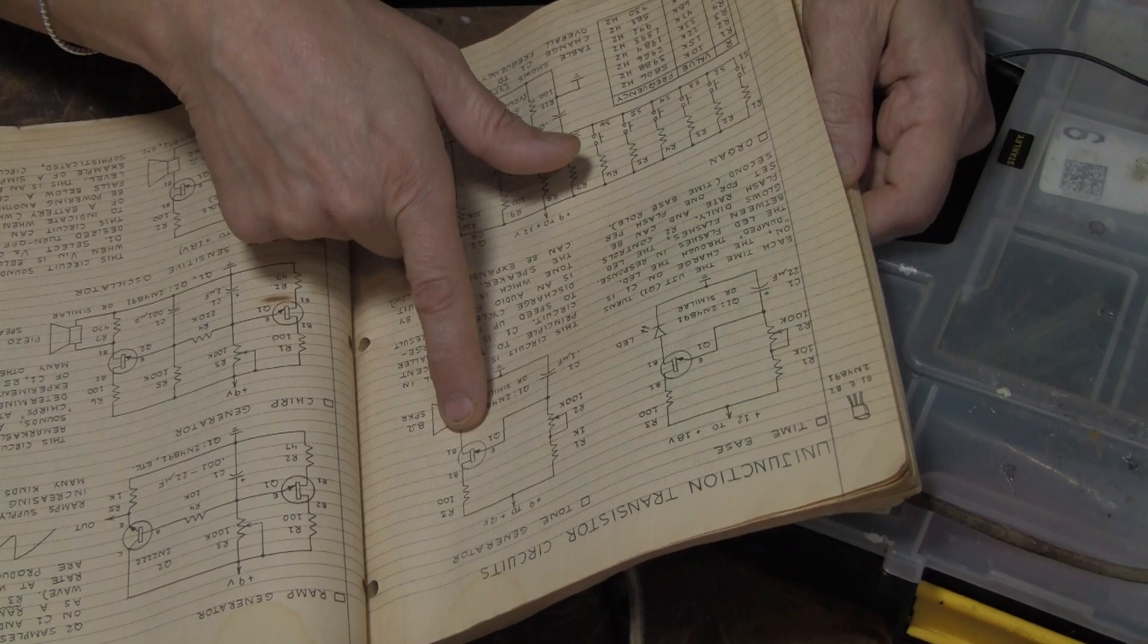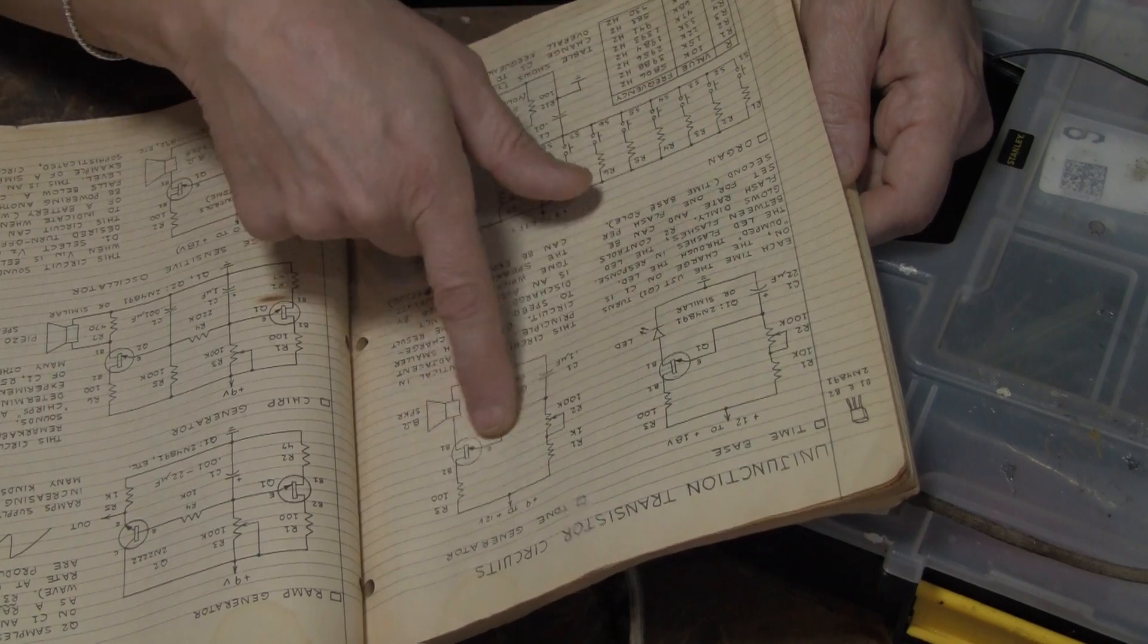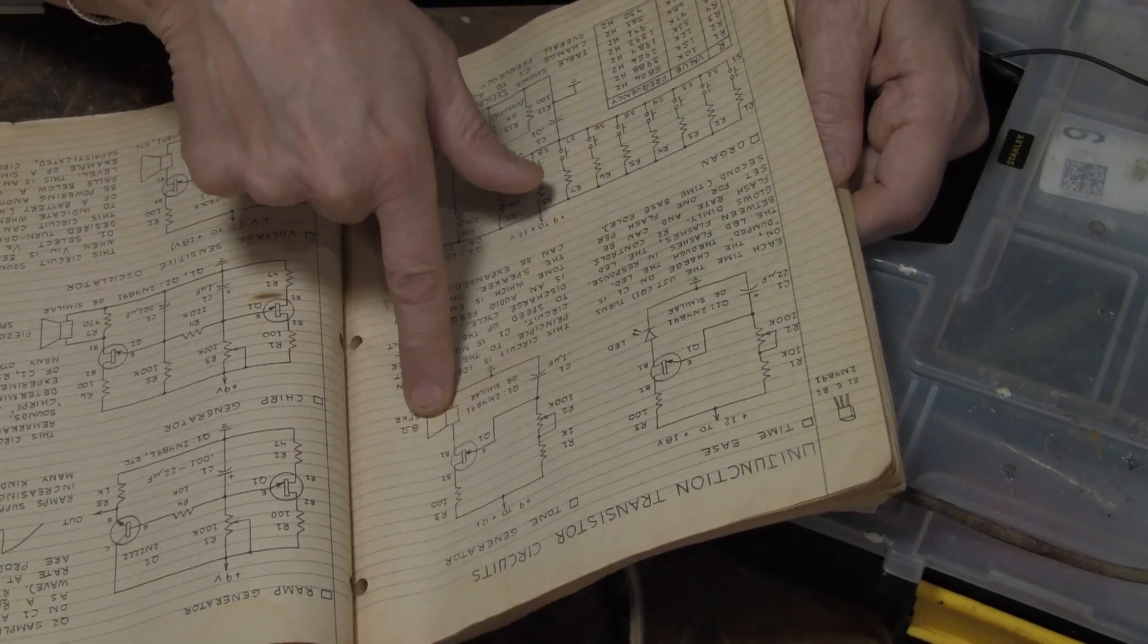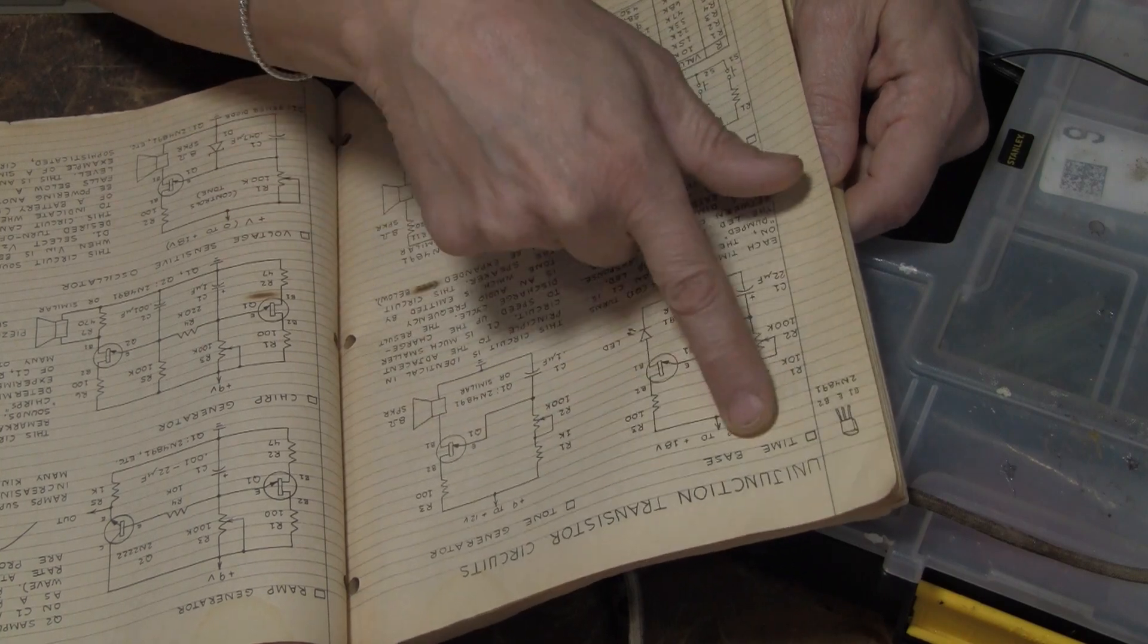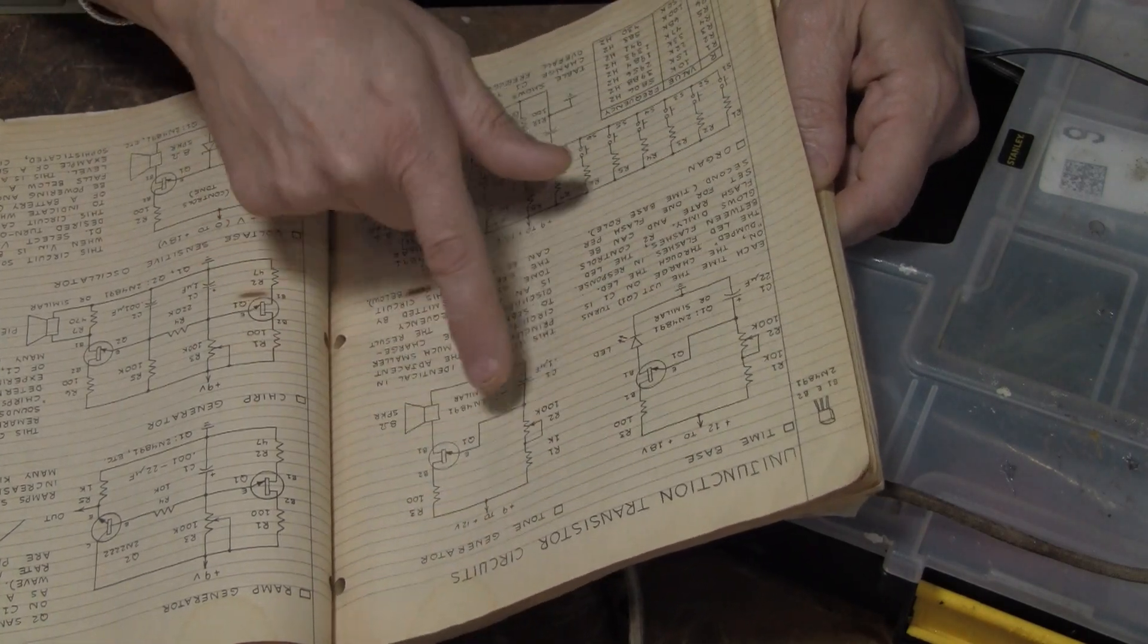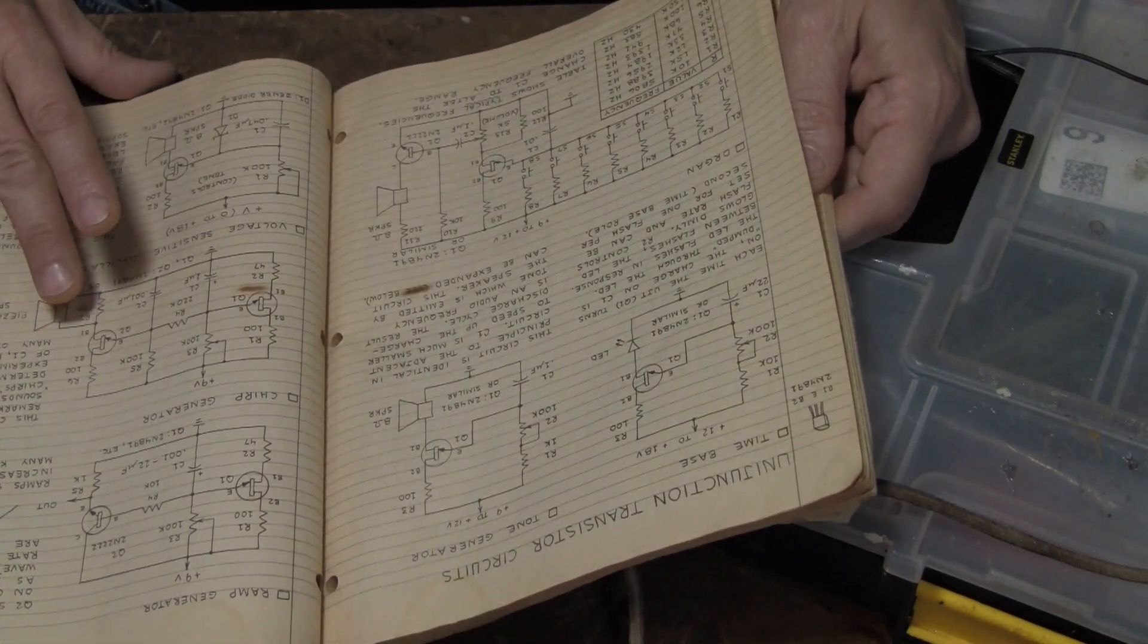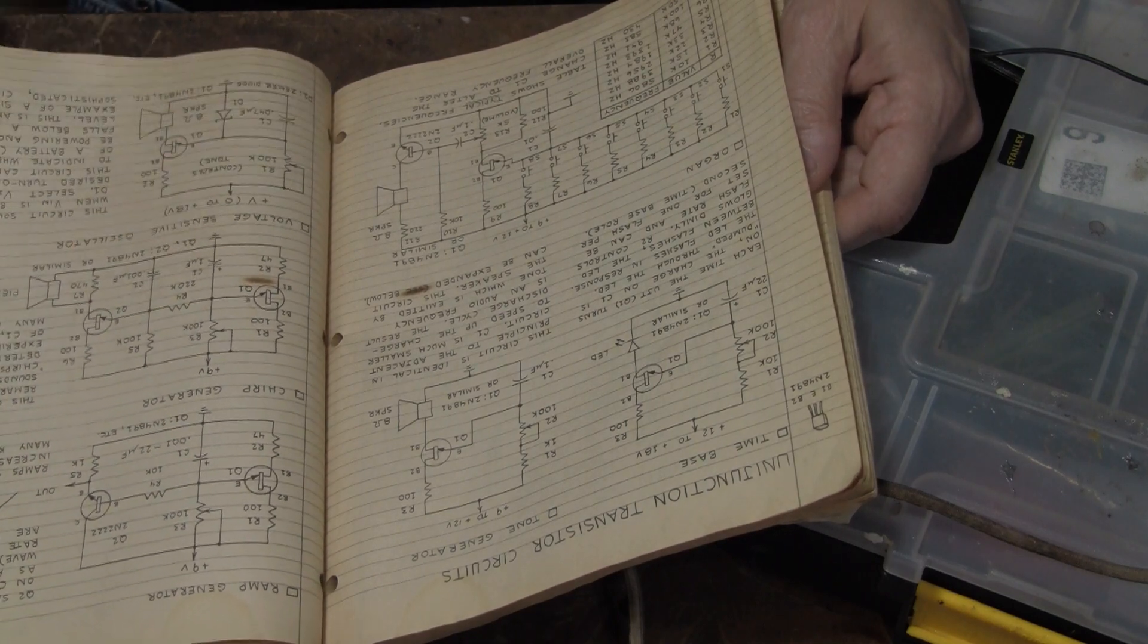There's this tone generator but they don't even make these anymore. And if you buy this little Union Junction transistor circuit it is like ten bucks a piece for one of those. So let's move on.